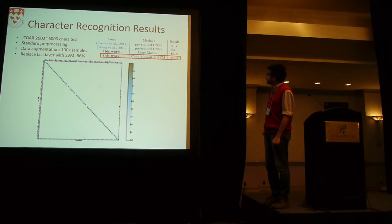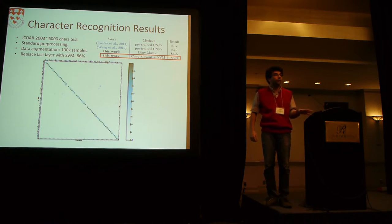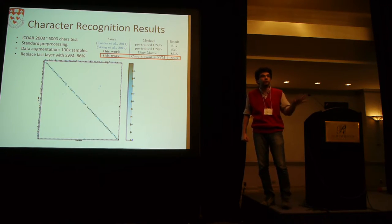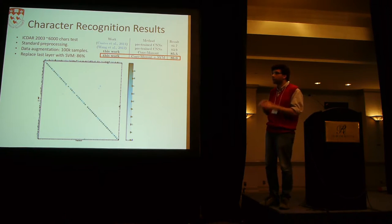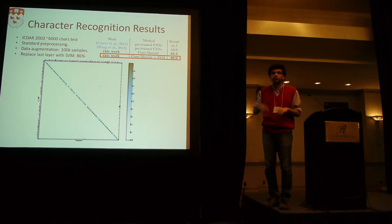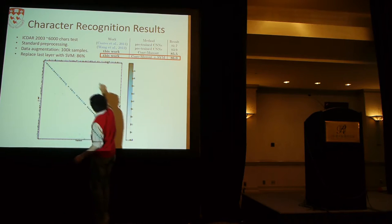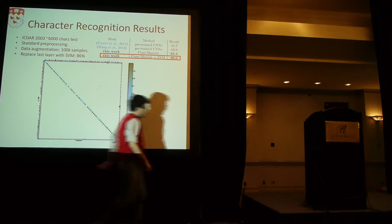How well does that work? It's a bit better than the state of the art. We test on the standard ICDAR 2013 dataset with about 6,000 characters. We used minimal preprocessing — experiments with segmentation, graph cuts, and everything else showed that standard contrast normalization works best. We did data augmentation, as did other methods, so it's a fair comparison. Replacing the last layer with an SVM with an RBF kernel inches accuracy a bit higher. The confusion matrix shows that most confusion comes from uppercase and lowercase characters being confused with each other — we're not sure how to get around that without context information.